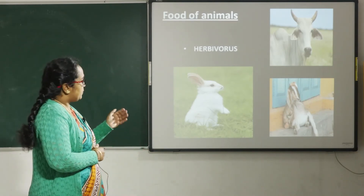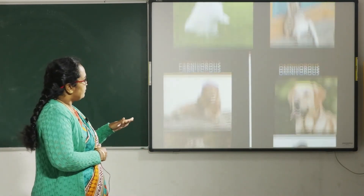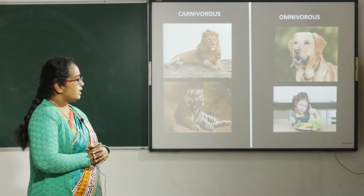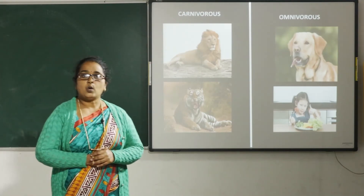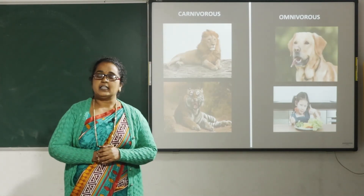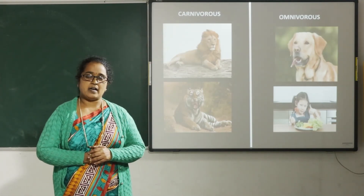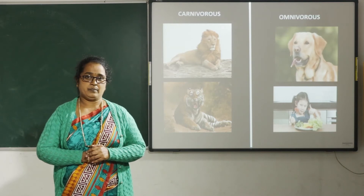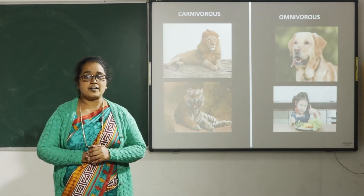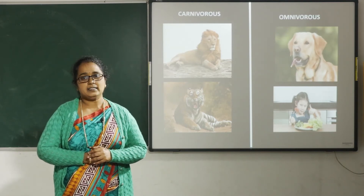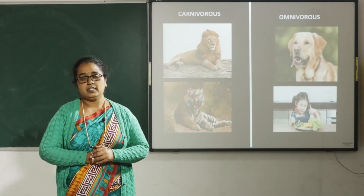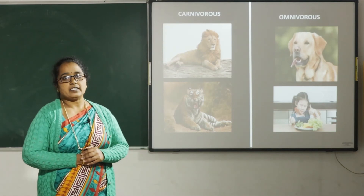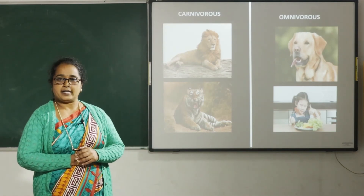Next you can see the picture of tiger and lion. What do they eat? They kill other animals and eat their flesh. They eat the flesh of other animals. They are known as carnivorous animals.